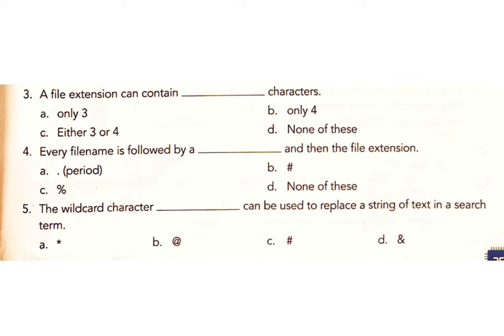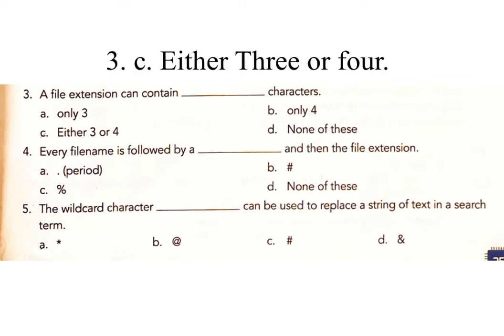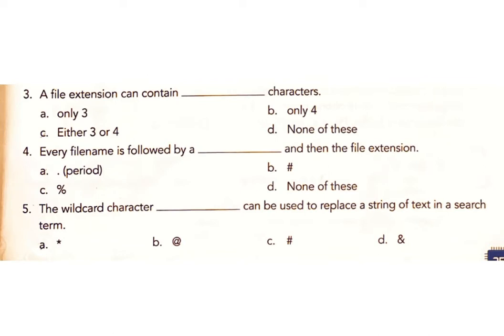Question 3: A file extension can contain how many characters? Options: A) Only three, B) Only four, C) Either three or four, D) None of these. Answer: C) Either three or four. Question 4: Every file name is followed by a blank and then the file extension. Options: A) a period...